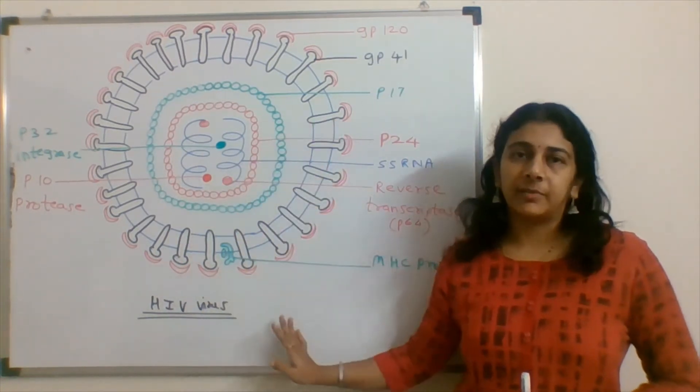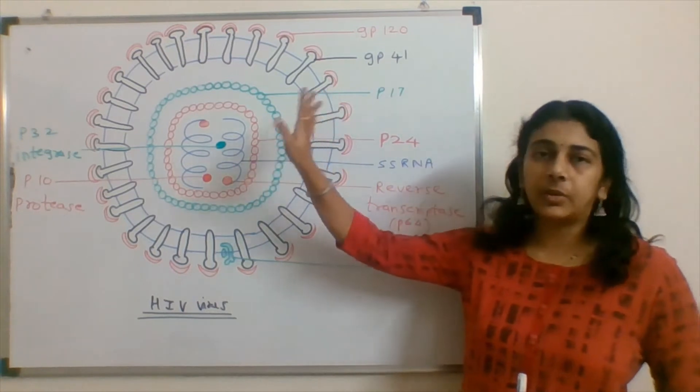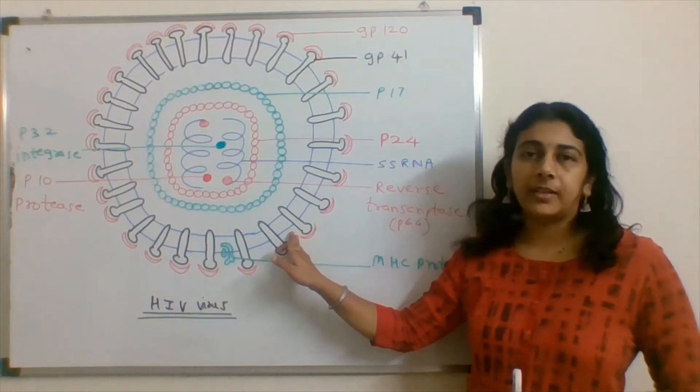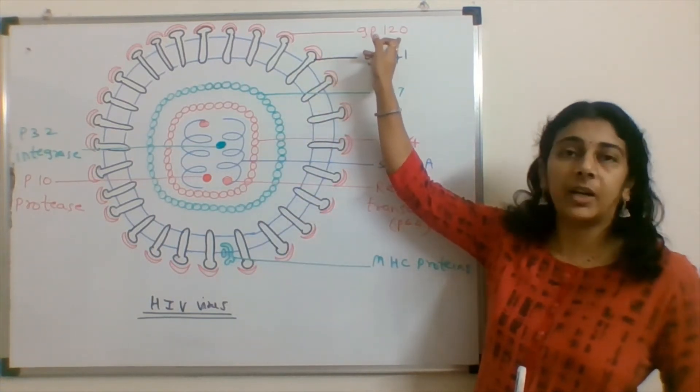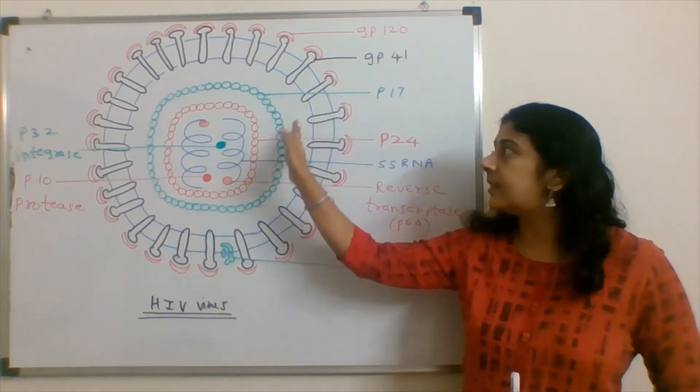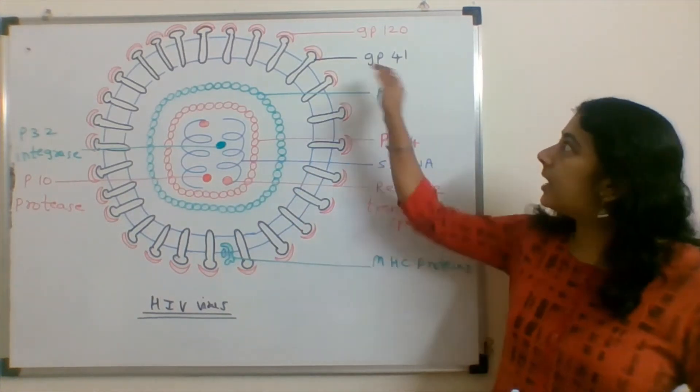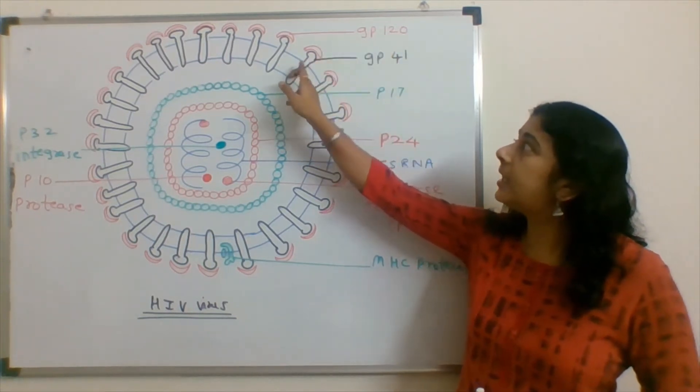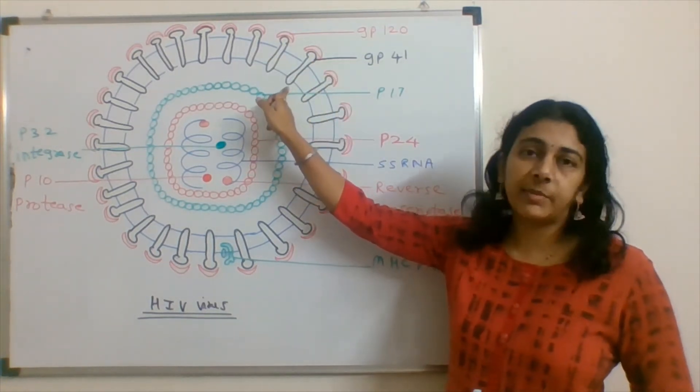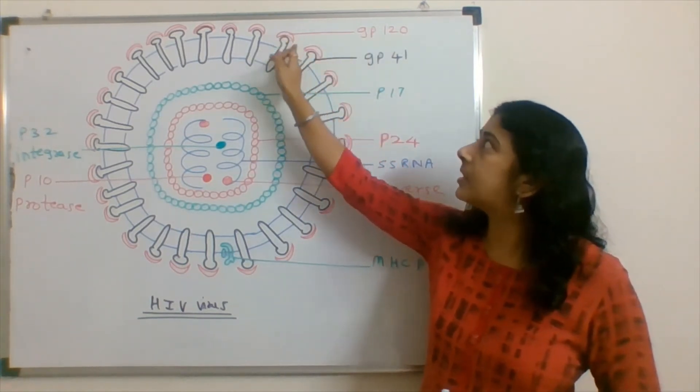If we look at the structure, this is a structure of HIV. In this outer covering which is a lipid bilayer, there are proteins GP120 and GP41. These are glycoproteins and these are present in the lipid bilayer of the virus. So here we can see GP120 is there at the outer side and GP41 is a transmembrane protein. This is there in a lipid bilayer.